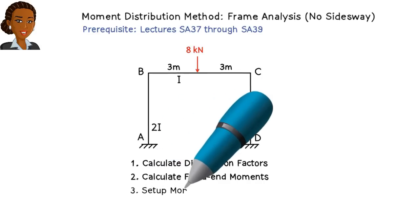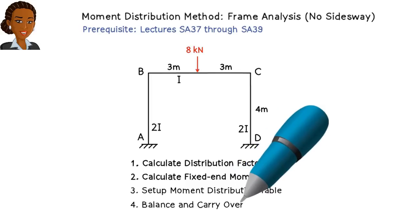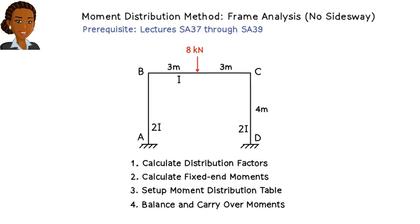Then, we set up the moment distribution table and go through the process of balancing the joints and determining the carryover moments repeatedly until a desired accuracy is reached.